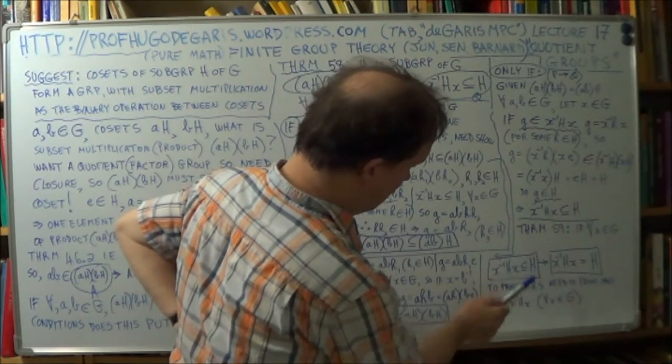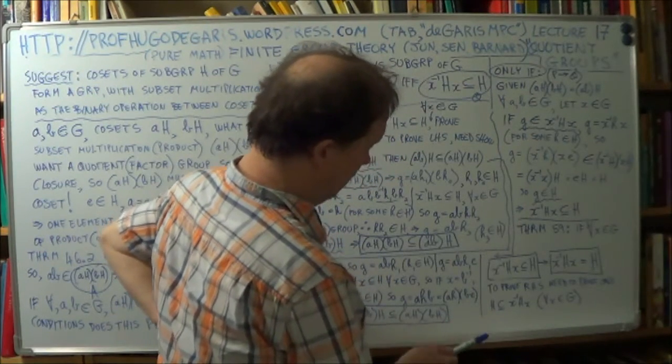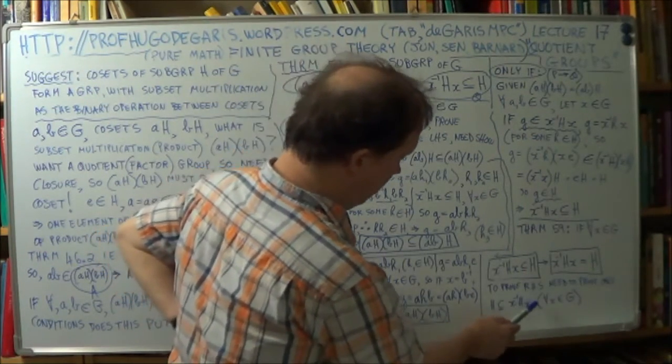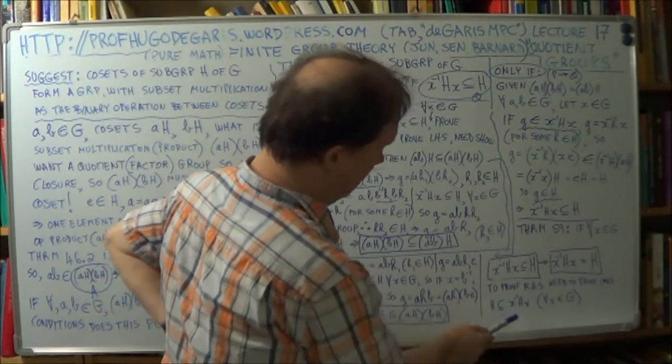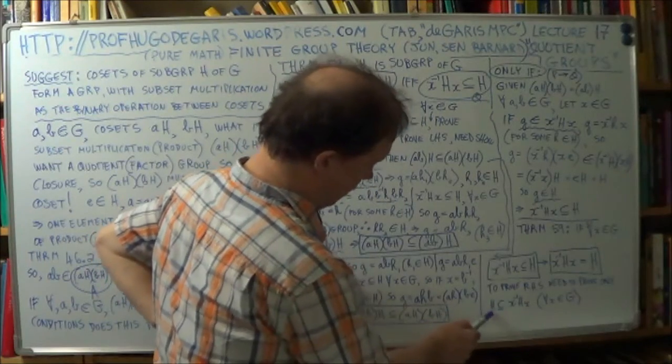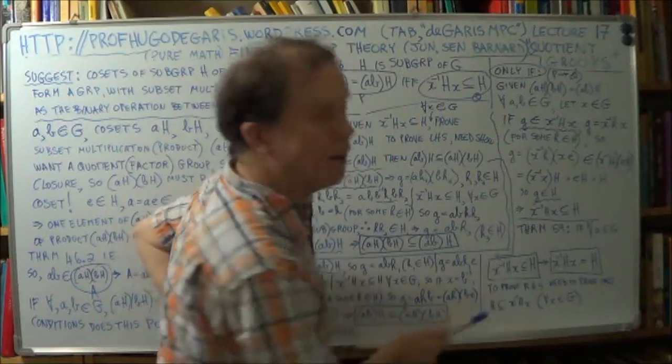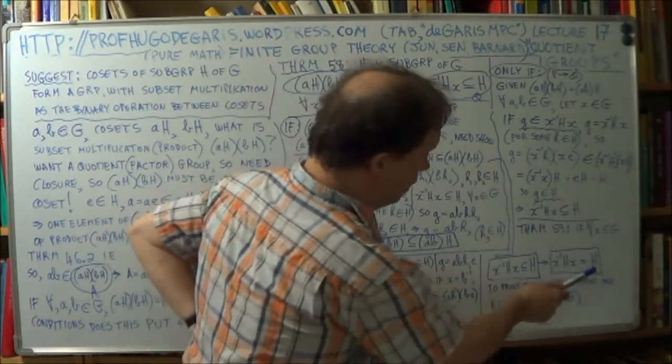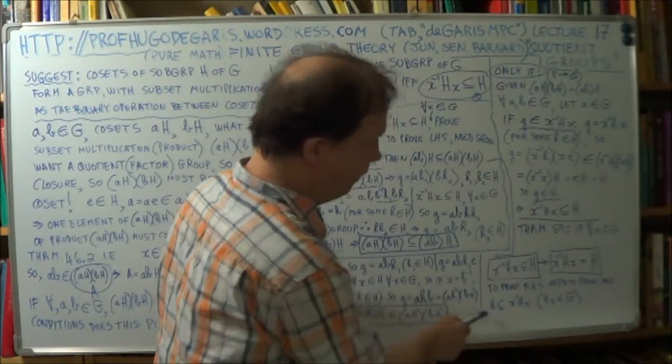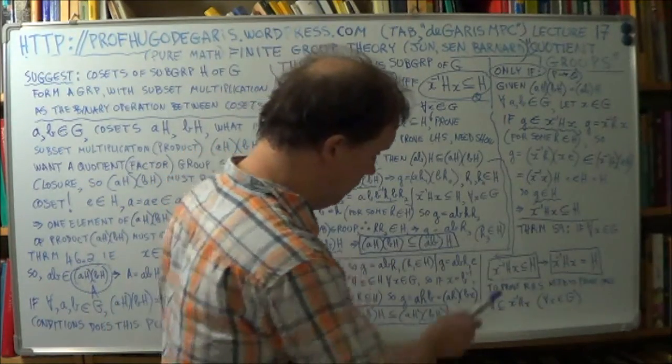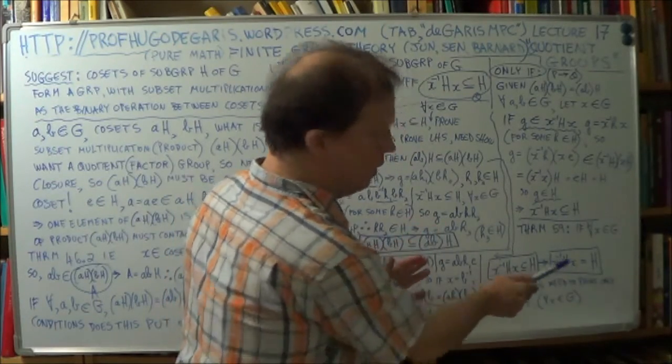So in other words, H is a subset of this. So if you can prove that H is a subset of that, if you have that result, and you're given this one, so you put the two together, and you get that. So in other words, proving this boils down to just proving this. Because that's given, and if you can prove that, then you can combine these two, and get that.